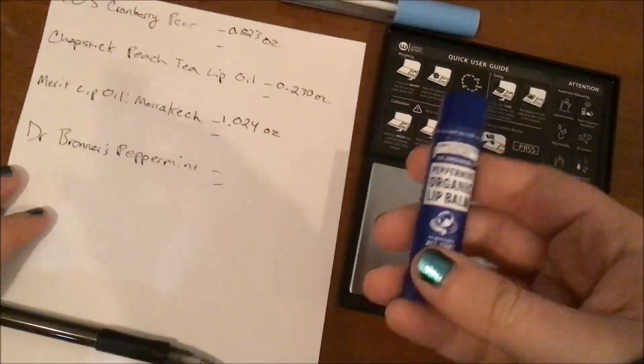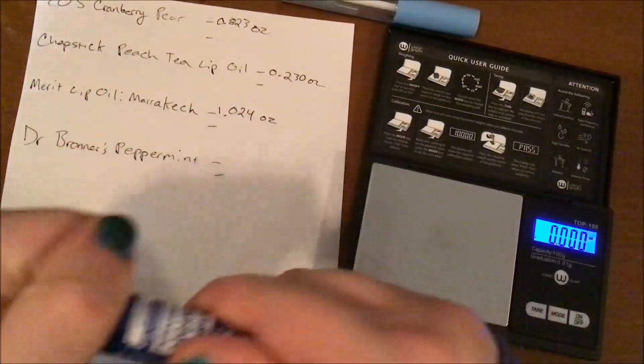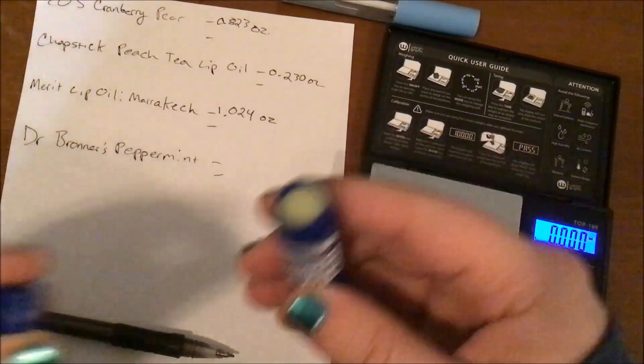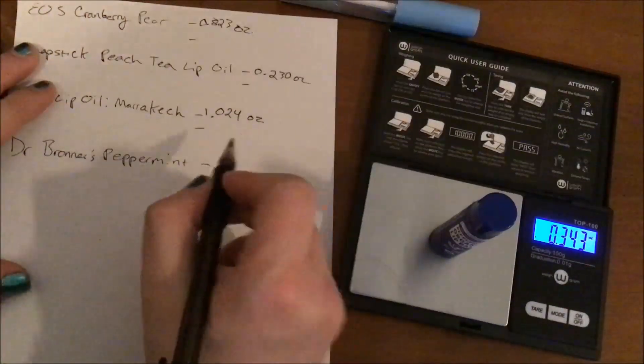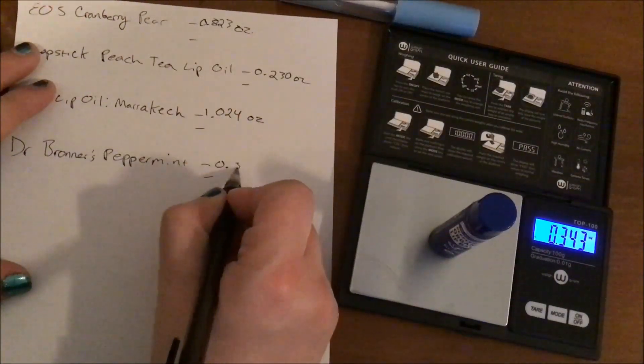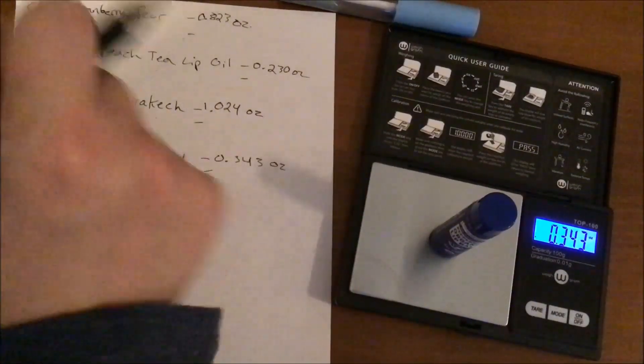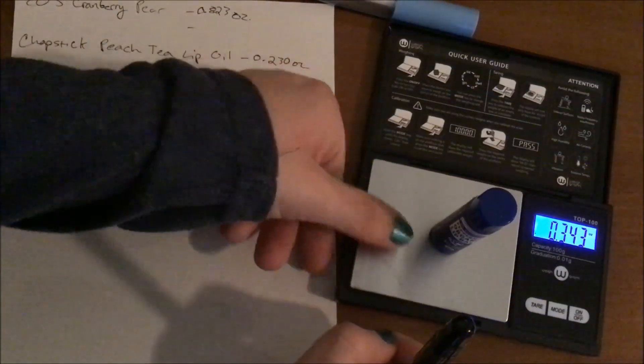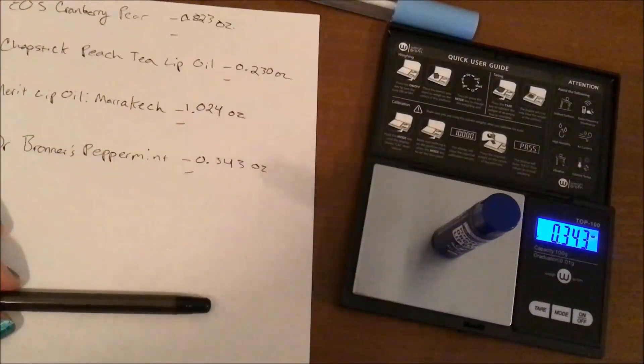And then finally, this one just because I want to, because it's been a while since I started it and I'd like to get more use on it, the Dr. Bronner's Peppermint Organic Lip Balm. It is basically still brand new, it's only got that much down in it, so it is at 0.343 ounces. Oh wait, actually there's a hair on the scale. Does that change anything? Probably not. It's not enough to make a difference of the weight, but anyway.